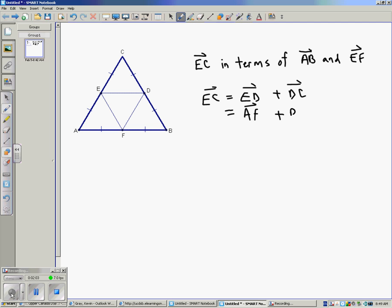Similarly, DC is the same as vector BD. That's a D there. So that second line of the solution can be replaced with AF plus BD, both being vectors. Third line.